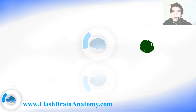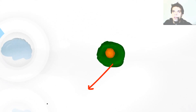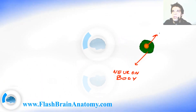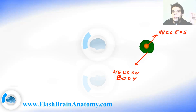First I draw the neuron body, which contains the nucleus. This is the neuron body and this over here is the nucleus. It also contains the Nissl body, which I will draw later. It also contains the regular cell organelles and sometimes a pigment.